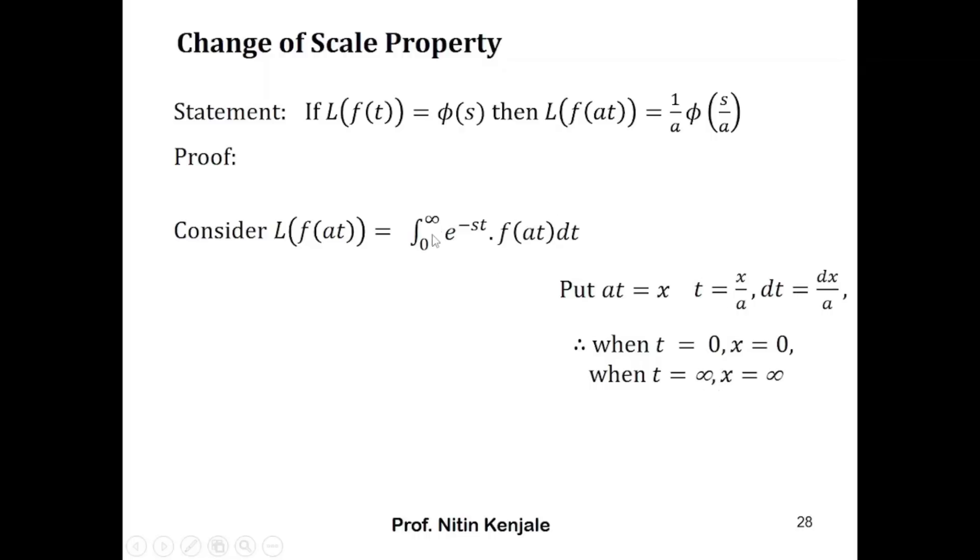We will put these values and these limits into this integral and will transform it from t to x. So your L{f(at)} now becomes integral of e raised to minus s times x/a into f(x) into dx/a. Since this integral is with respect to x, this a is constant, you can take it out. So we have 1/a integral of e raised to minus s/a times x into f(x) dx.